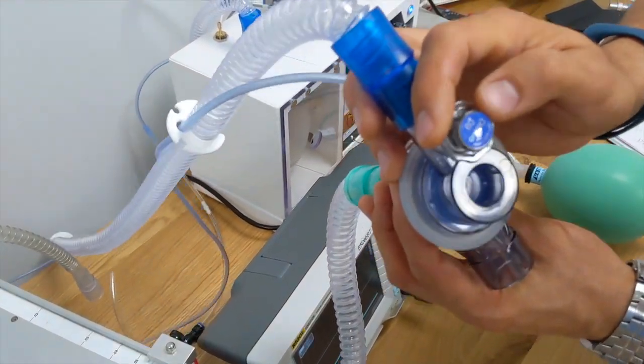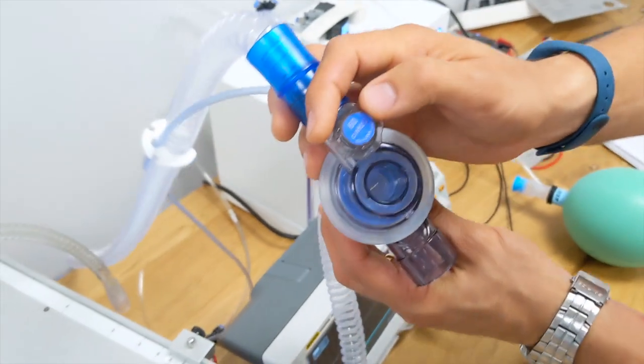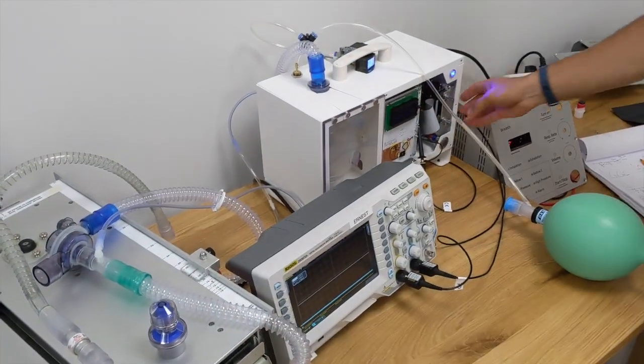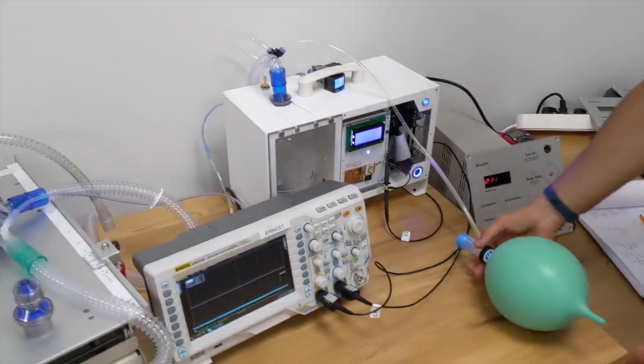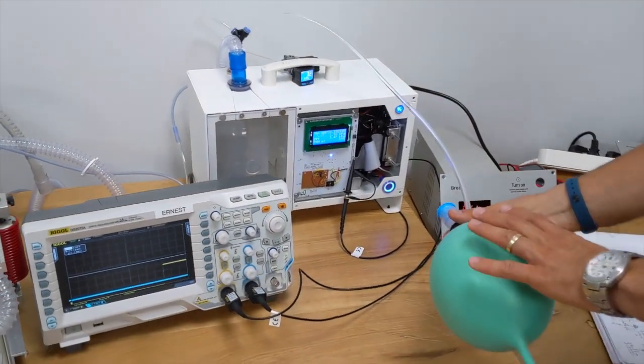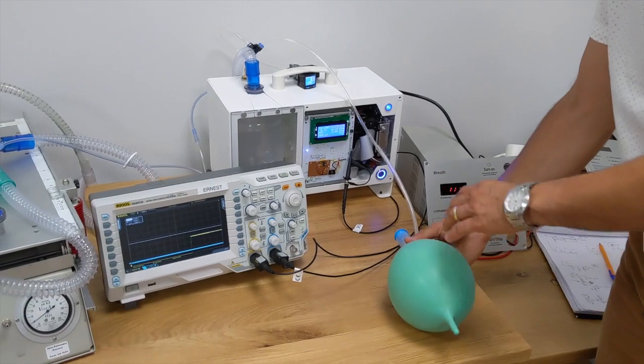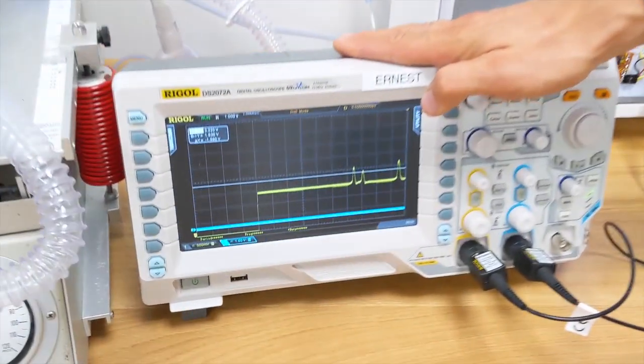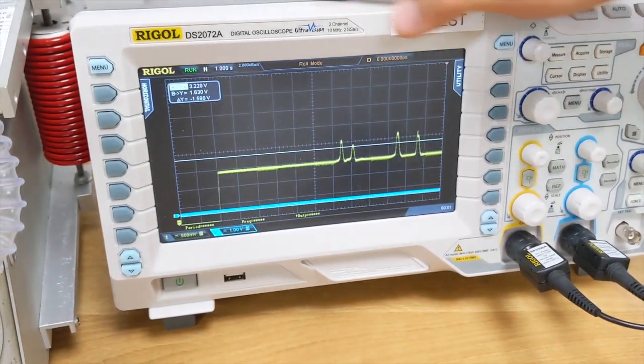And here is the mechanical maximum pressure valve with value 60. And now we have the testing of the maximum pressure. Here is the constant pressure. And by squeezing the bag, the quick impulses, you can see that it's shown by the oscilloscope.